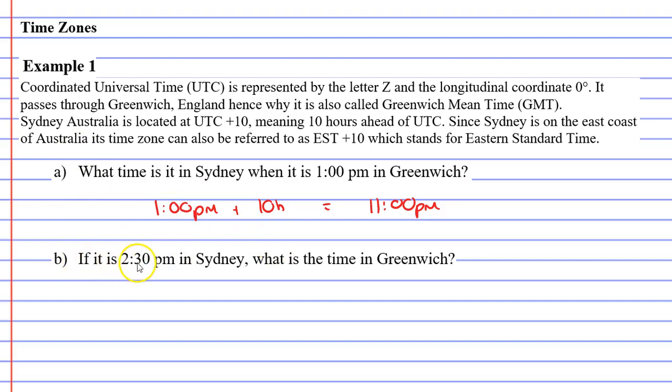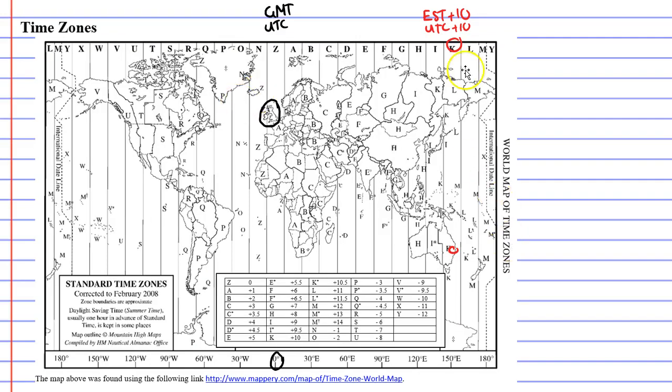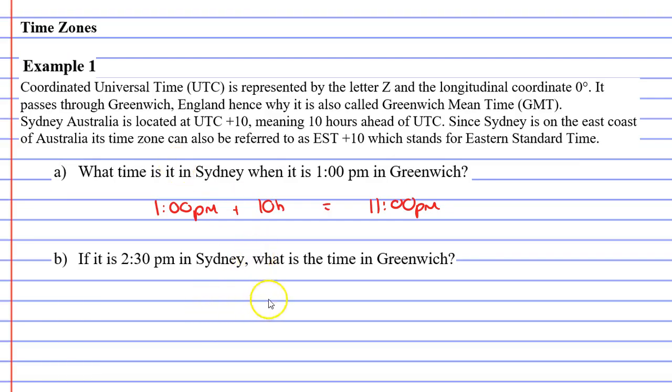Question B. If it is 2:30 pm in Sydney, what is the time in Greenwich? Now, Sydney is 10 hours ahead of Greenwich, which means that Greenwich is 10 hours behind Sydney. So what we need here is some sort of a number timeline. And Sydney is 2:30 pm. And we need to go 10 hours backwards so that we can figure out what the time is in Greenwich. So to do that, it is quite important to figure out where 12 o'clock is. And this is 12 noon.